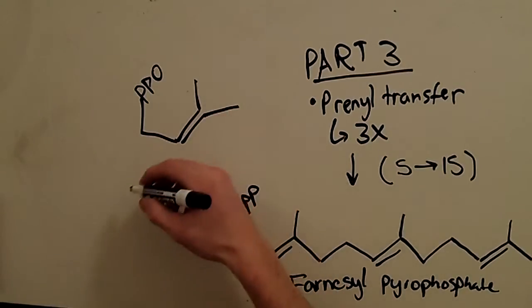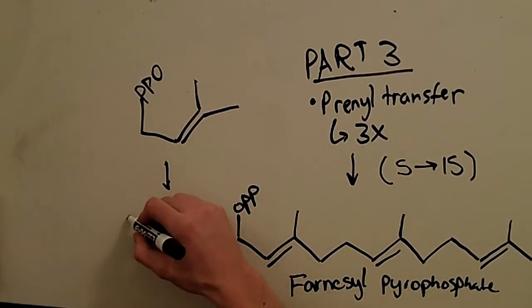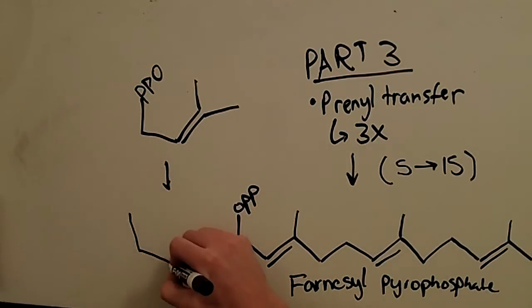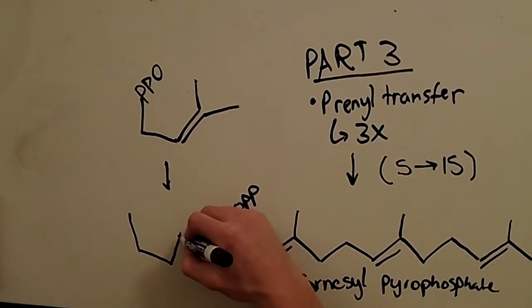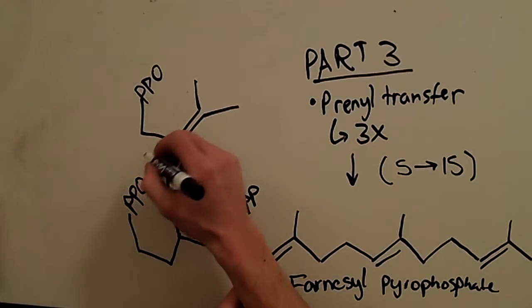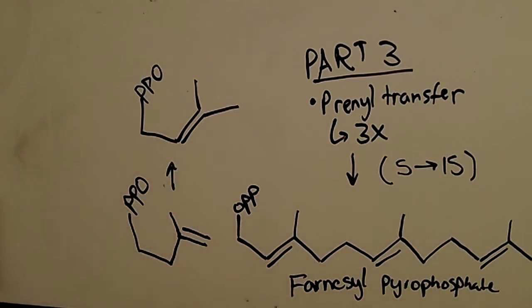And before we had isomerized it, we had this compound, which is actually called isopentenyl pyrophosphate, and it was just an isomer, and it had the double bond there rather. Okay, so the arrow was going in this direction for the synthesis.